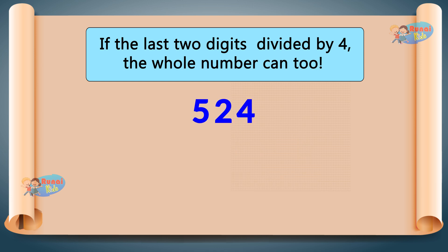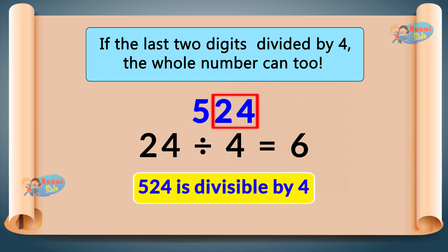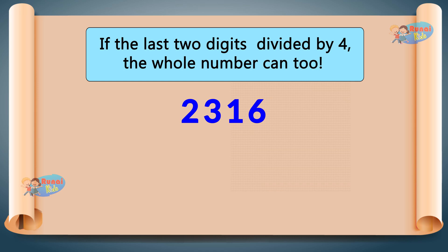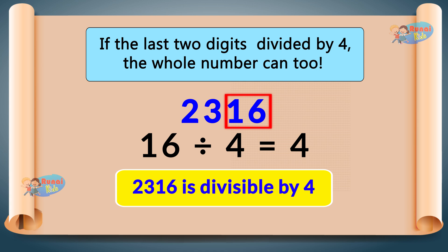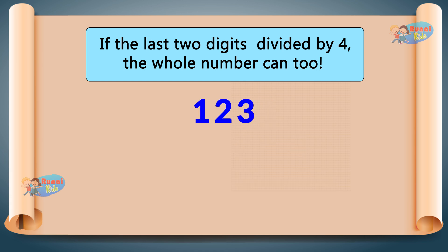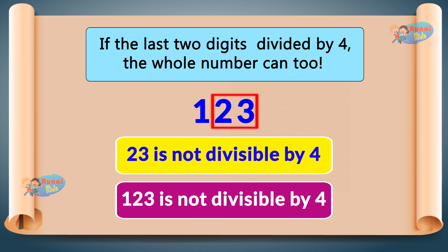524 — last two digits are 24. Since 24 divided by 4 equals 6, 524 is divisible by 4. 2316 — last two digits are 16. Since 16 divided by 4 equals 4, so 2316 is divisible by 4. 123 — last two digits are 23. Since 23 is not divisible by 4, so 123 is not divisible by 4.